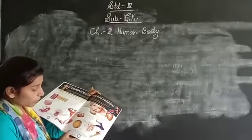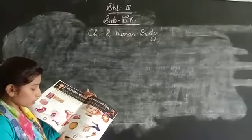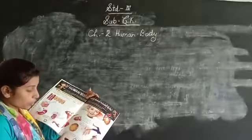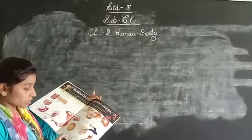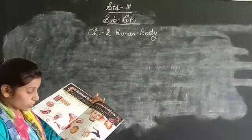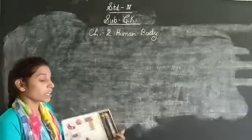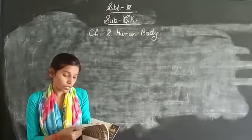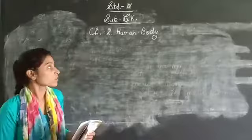The only part of the body that has no blood supply is the cornea in the eye. The cornea is a part of the body which does not have blood supply. It takes oxygen directly from the air.